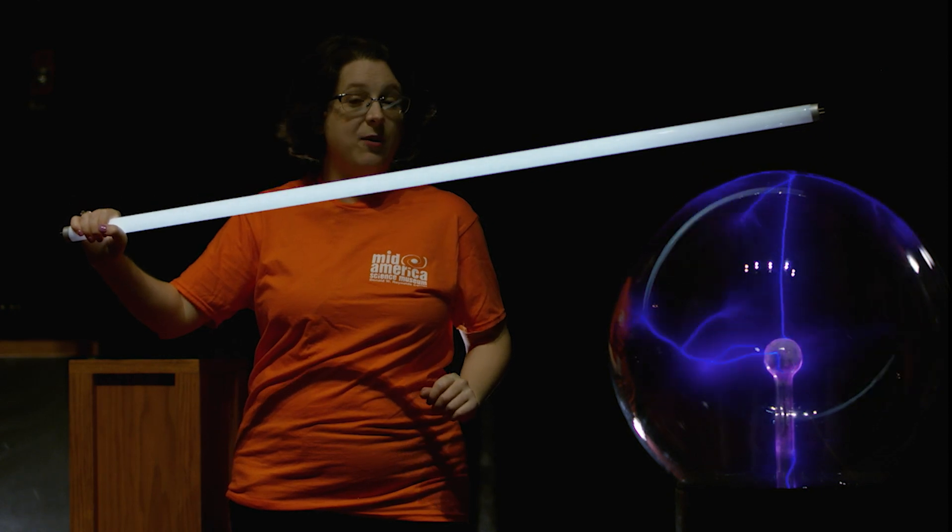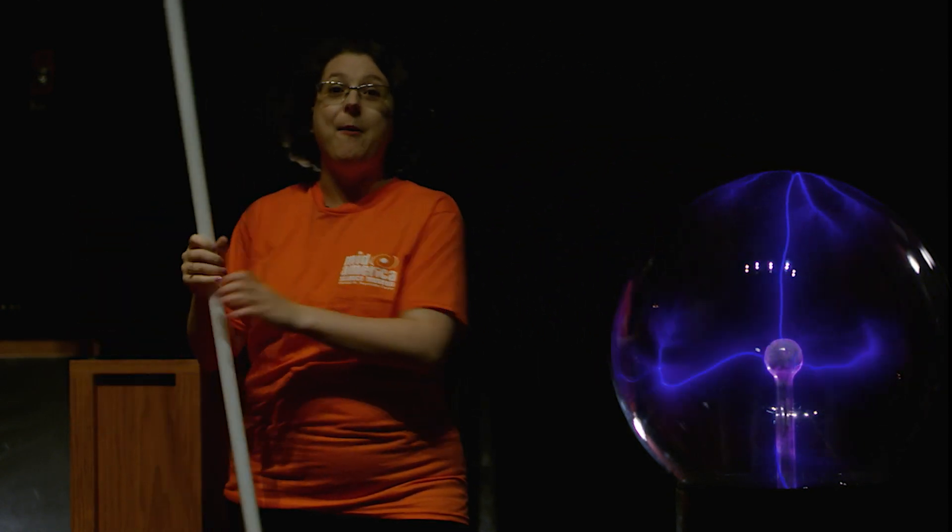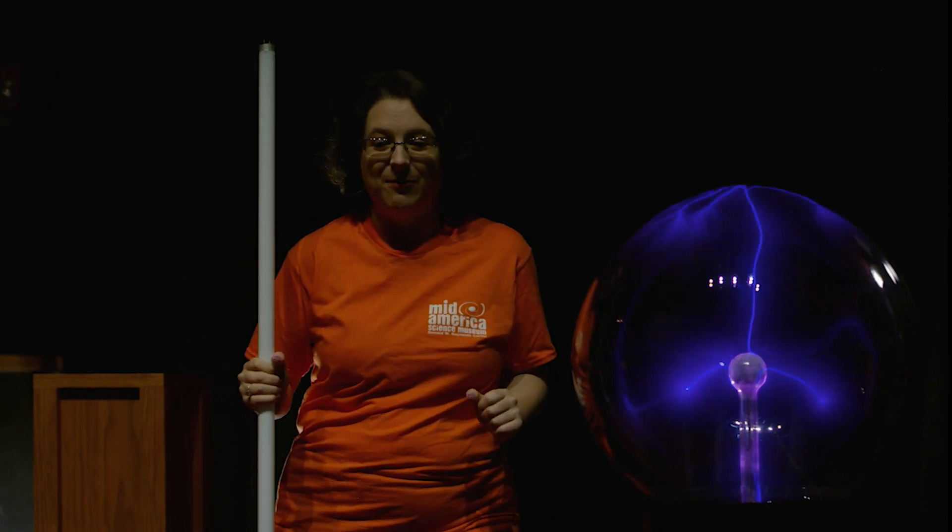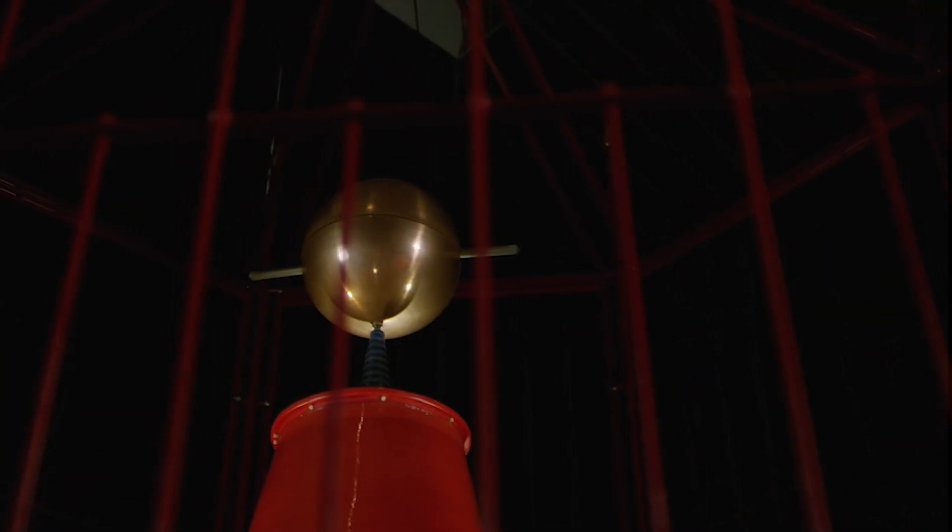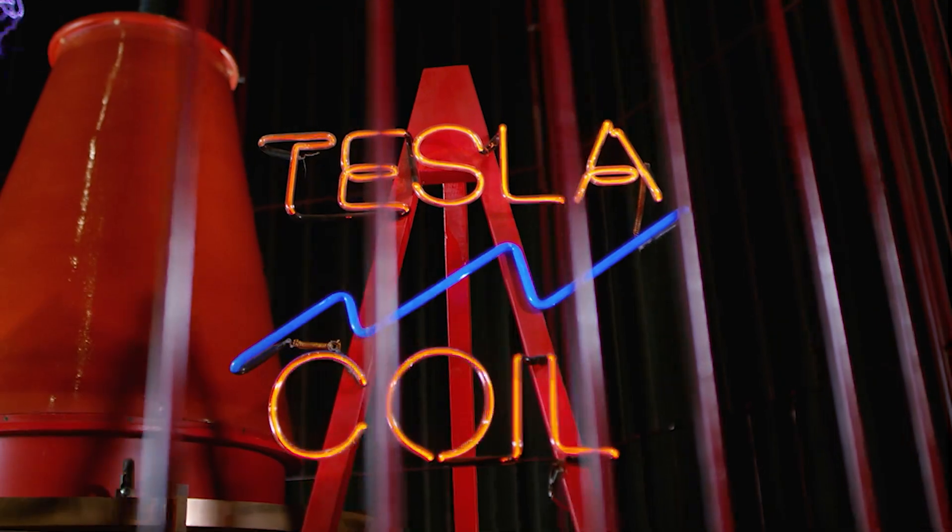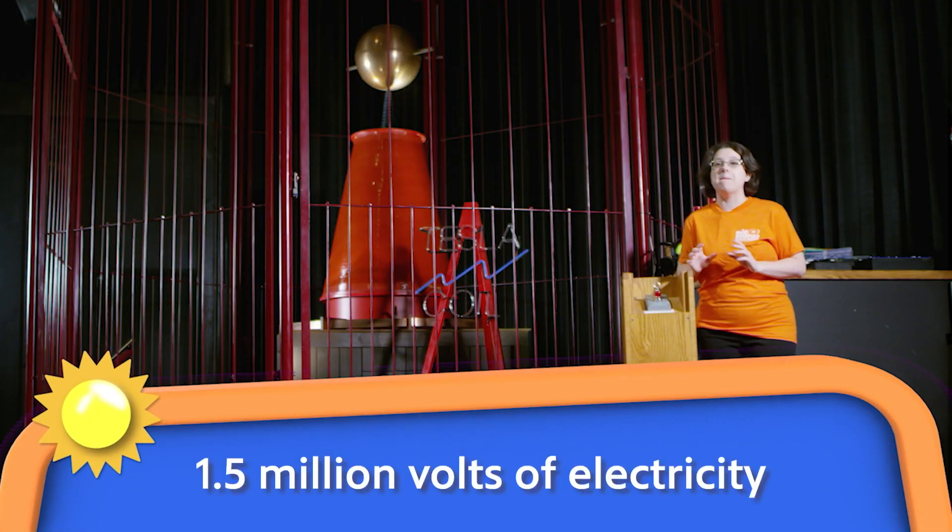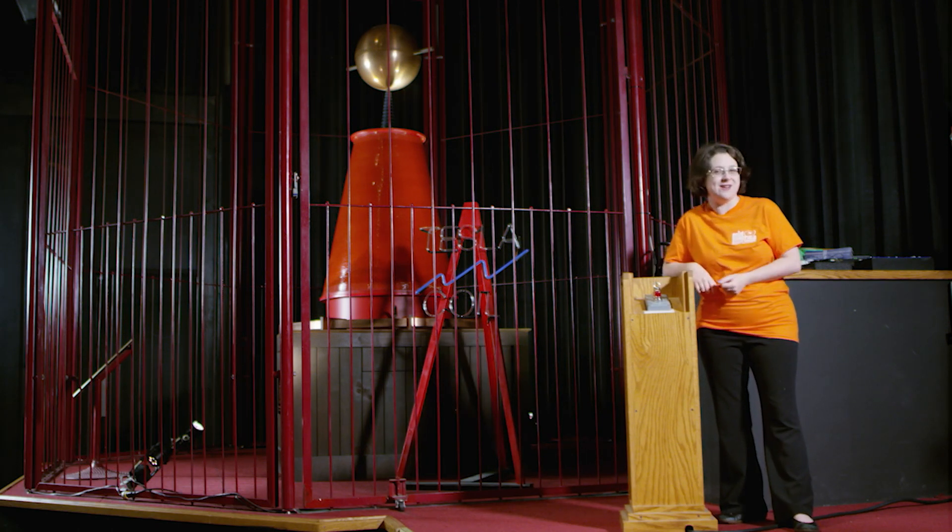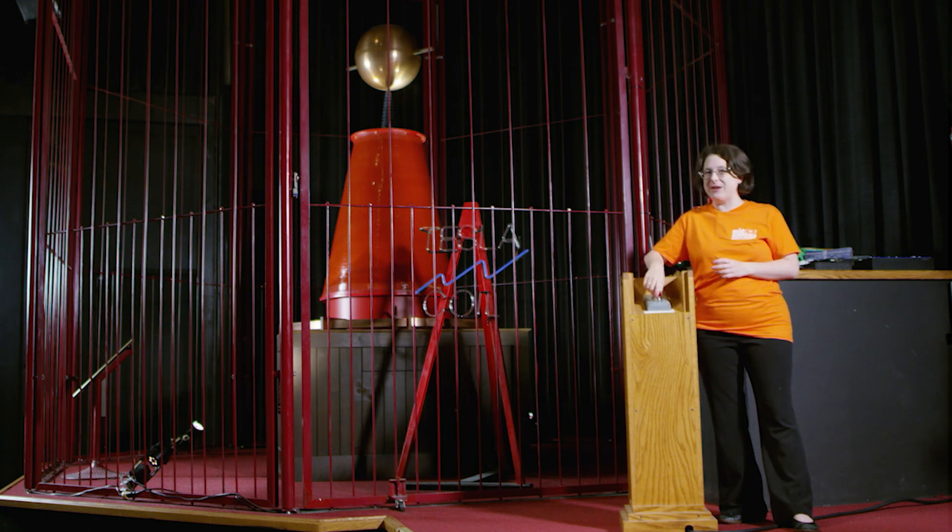But to learn about thunder and lightning, we're going to need something bigger. Much, much bigger. Come over here and see what I'm talking about. This is our Tesla coil. It gives off one and a half million volts of electricity. It's the world's most powerful conical Tesla coil according to the Guinness Book of World Records. Are you ready to see what it can do?